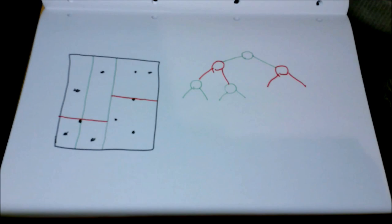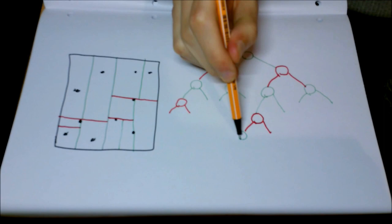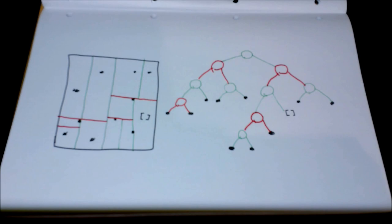We will continue like this, alternating between splitting along the x- and y-axis, until each cell only contains one point. We now have our finished tree structure.